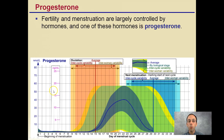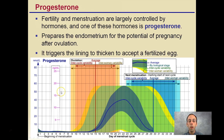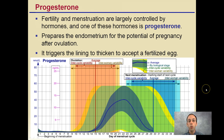The last hormone, progesterone, is involved in fertility, and the menstrual cycle is largely controlled by hormones, one of them being progesterone. It prepares the endometrium for potential pregnancy after ovulation. You can see here a graph of how it changes during the menstrual cycle. It can also trigger the lining to thicken and accept a fertilized egg in females. So those are just a quick overview of the three sex hormones.